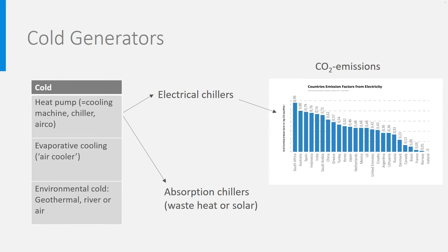In another lecture, we will address into more details chillers and their combination with environmental cold. Compression chillers use electricity. So, the cooling system is as sustainable as the electricity is. You see here the emission factors of electricity in diverse countries, on the right. There are also absorption chillers in which the electrical compressor is replaced by a thermal one, driven by waste heat or solar heat.